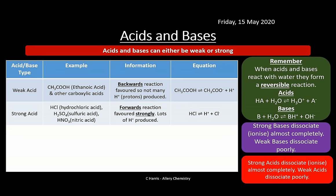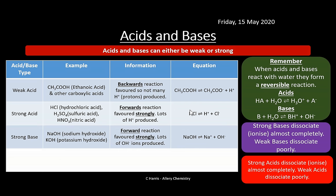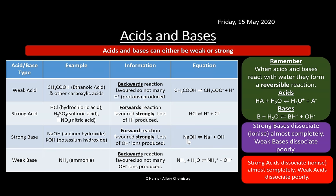Strong acids include hydrochloric acid, sulfuric acid, and nitric acid - these are normally called mineral acids, not organic acids. The forward reaction is strongly favored in these reactions. With strong acids, we assume they dissociate almost completely, so we get loads of H⁺ ions. In fact, we can make the assumption that 100% of these dissociate to form H⁺ ions, and we'll see that when calculating the pH of strong acids.